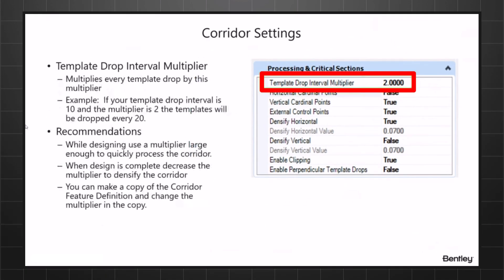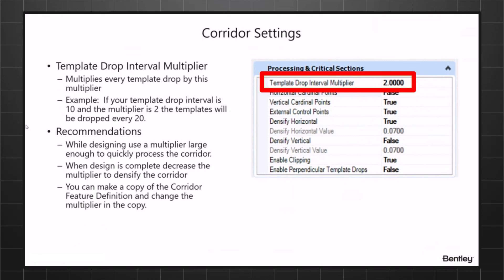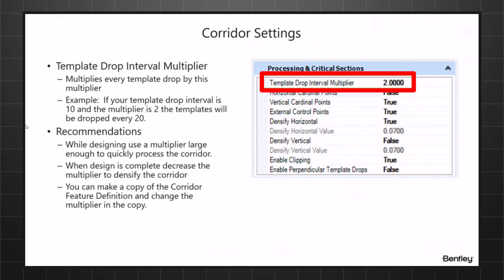The first one I want to address is the template multiplier. This one is important for processing speed. For instance, if you put in a template drop of 10 and a multiplier of 2, when the corridor is processed the templates will actually drop at every 20 feet. If you want them back at 10, just go to the feature definition, change it back to 1, and reprocess the corridor — it will drop them every 10 feet.